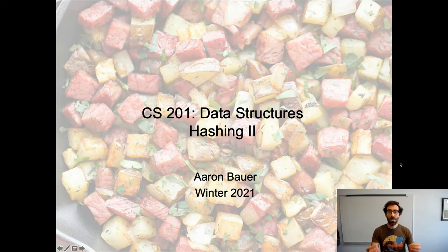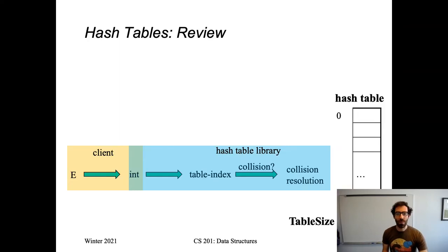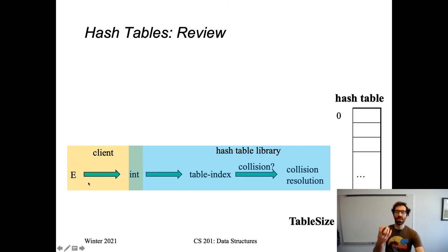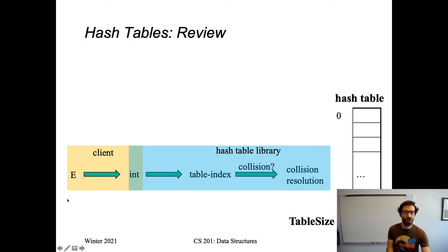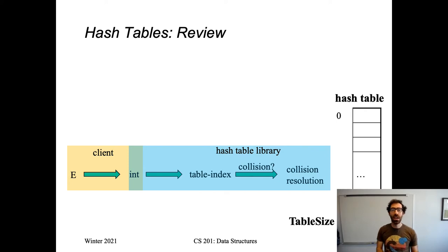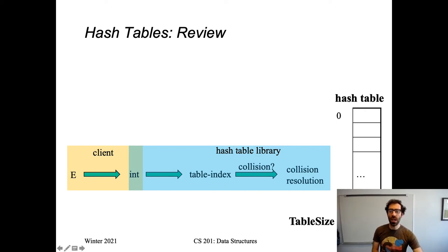Hello. It's time for hashing part two. Let's start out with a bit of review. When we're talking about hash tables, we have some keys of some type E that we're storing in our hash table. The client, the code that's using the hash table, is responsible for turning those objects into integers. And then the hash table library, the implementation of the hash map or hash set in Java, for example, will turn those integers into table indexes in some fixed size internal array.